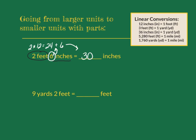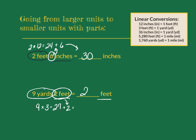In this next problem, we're going from 9 yards 2 feet to just feet. Again, I'm going to set aside the 2 feet because they match our end unit and I'm just going to convert the 9 yards. If I have 9 yards and there are 3 feet in each yard, I'm going to end up with 27 feet. But now I have to add those 2 feet back in, and when I add 2 to the 27, I get my answer of 29 feet.